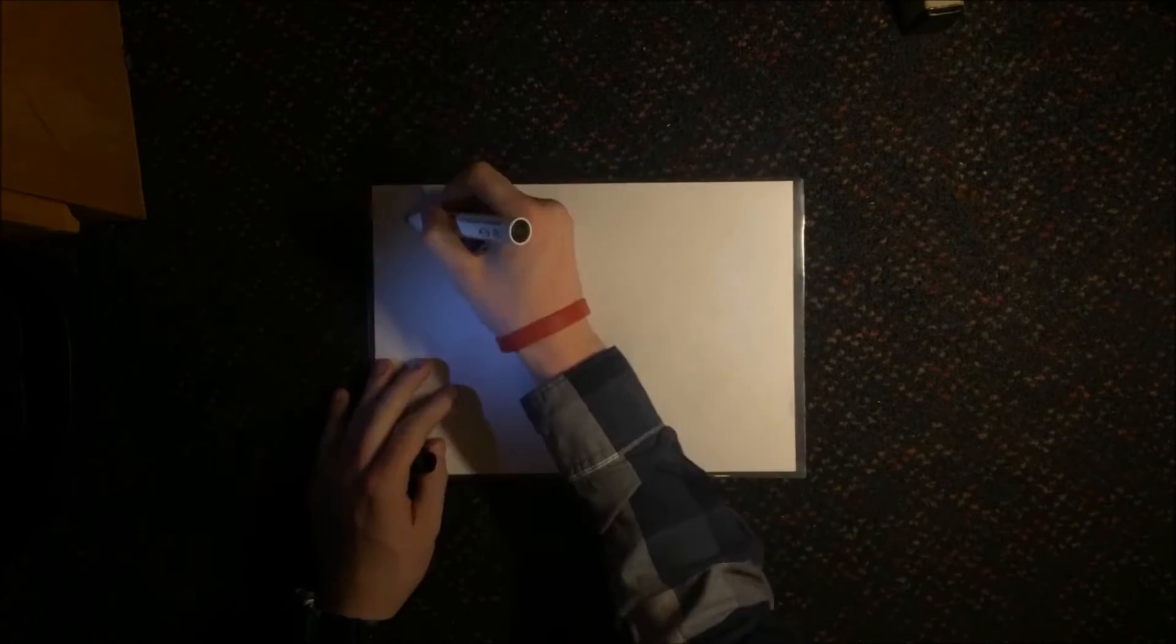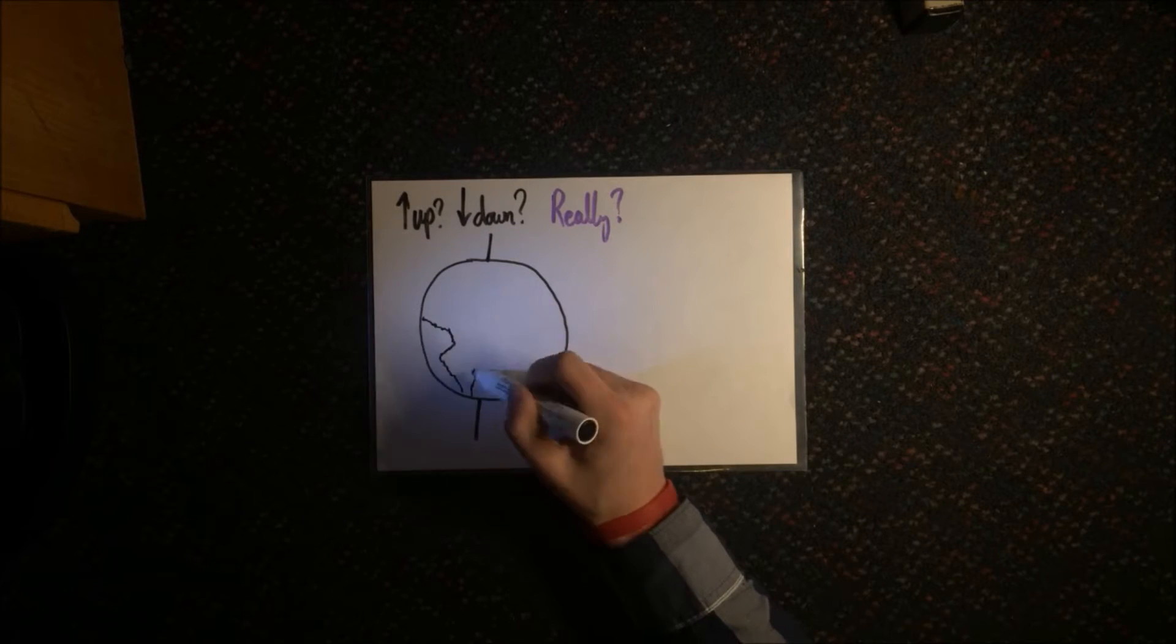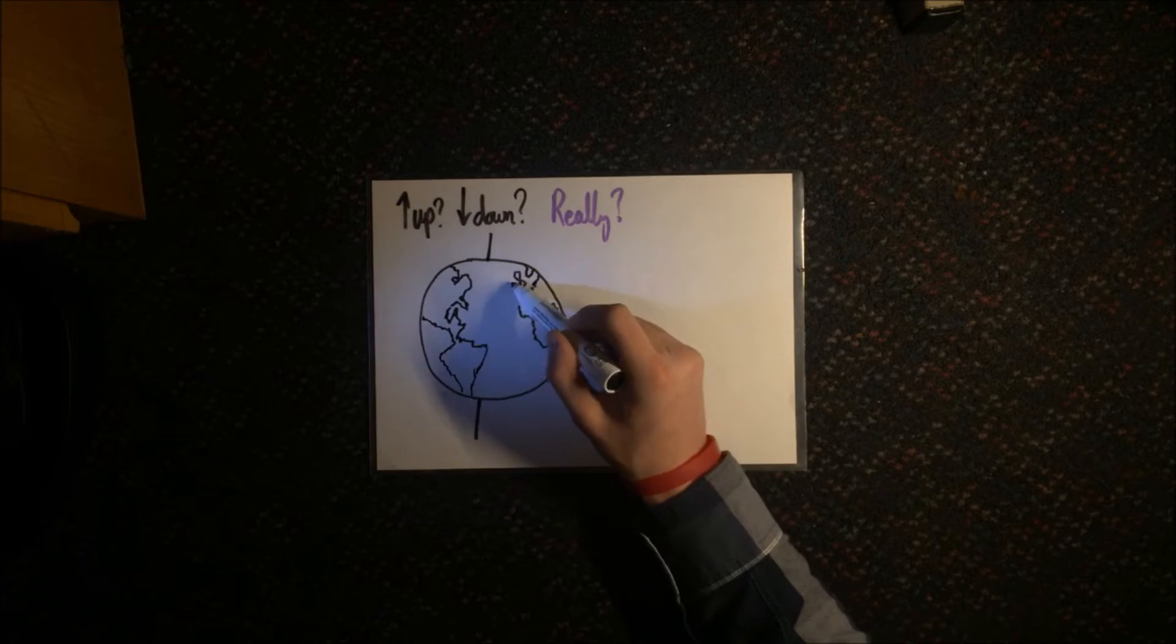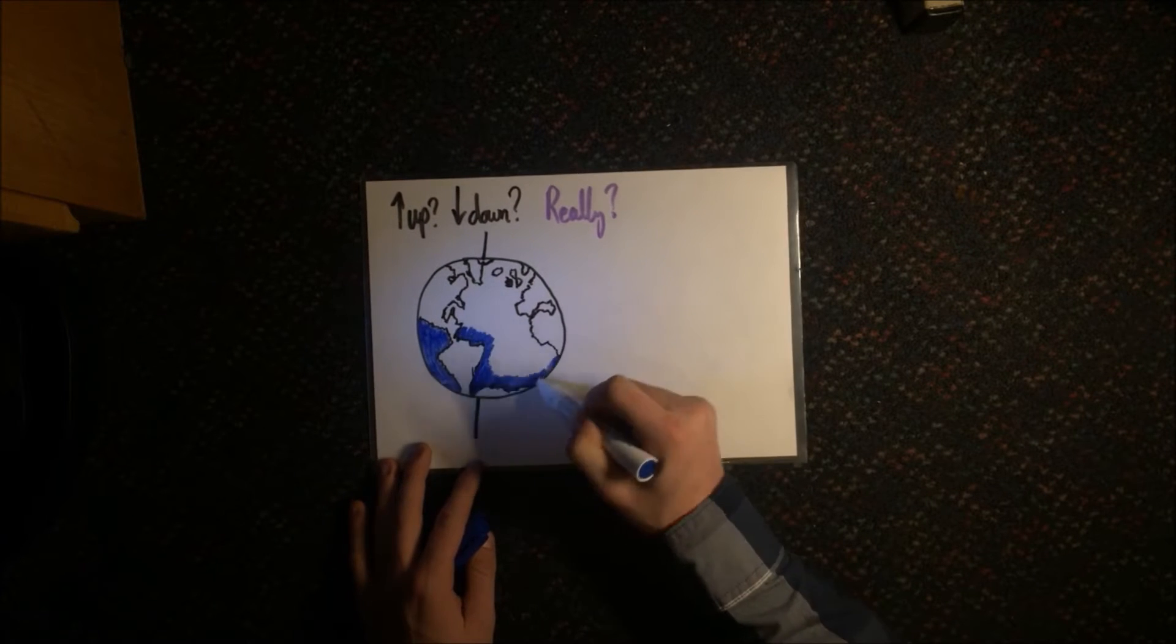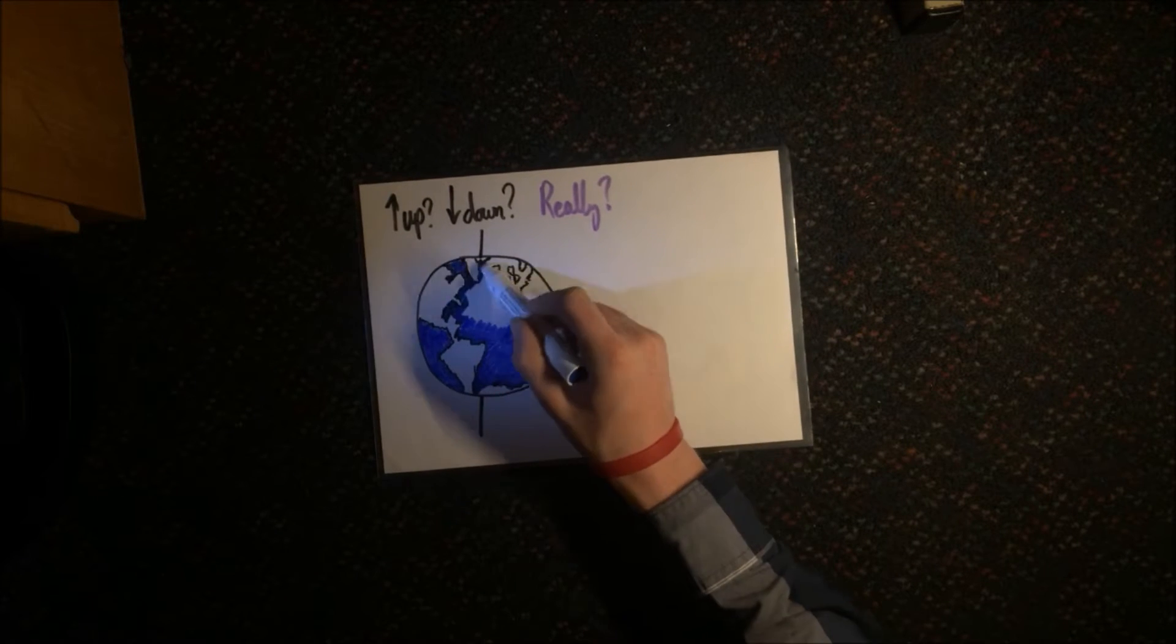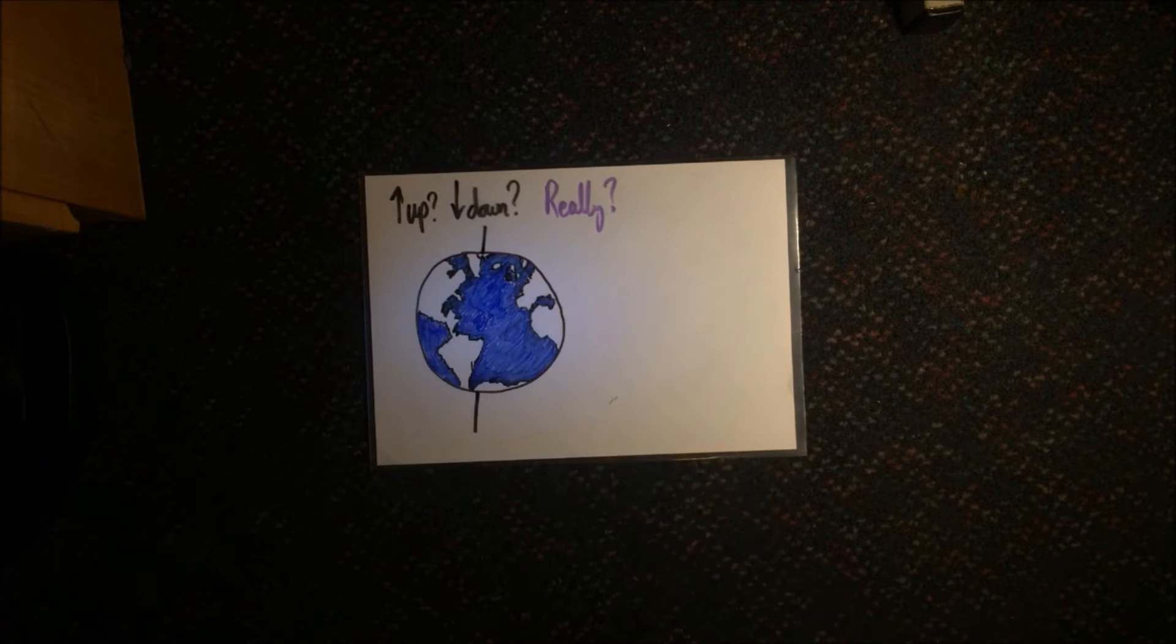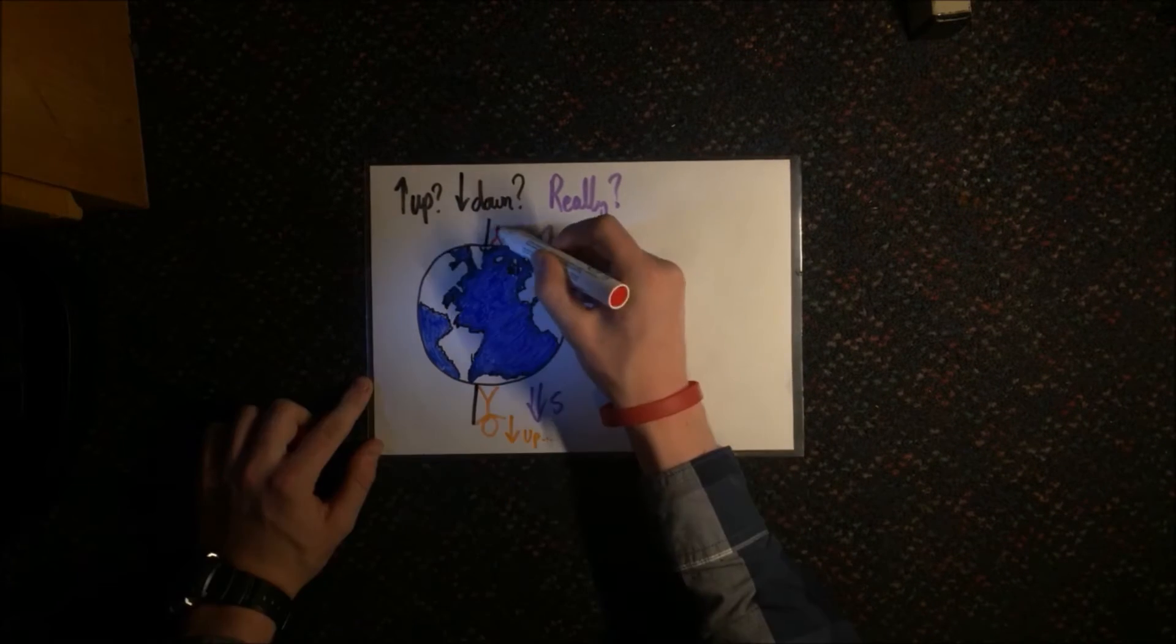Which direction is up? Now you might think this is a ridiculous question because the sky is up and the ground is down, but it's not so simple because the Earth is a sphere. The upwards direction while you're on the North Pole is the downward direction for someone on the South Pole. So it's relevant to the person you're talking about.